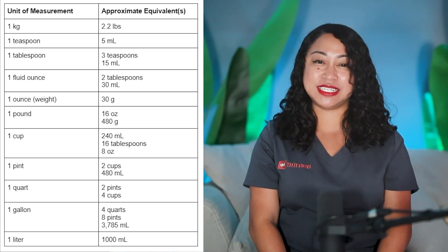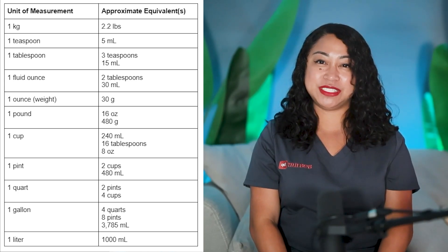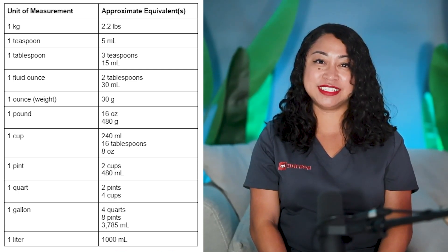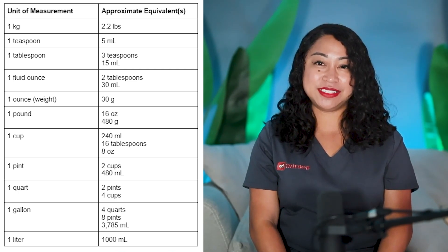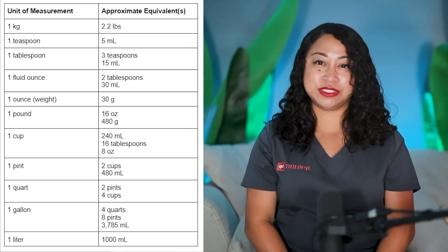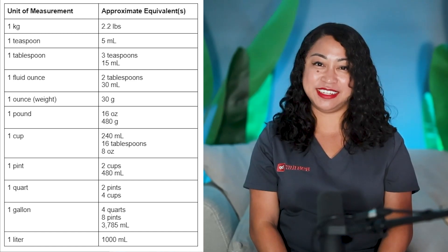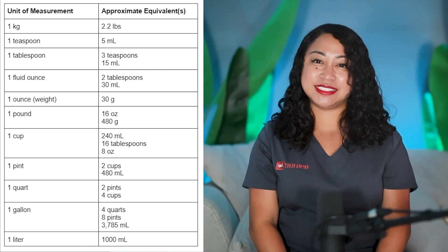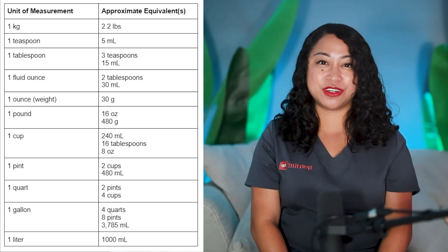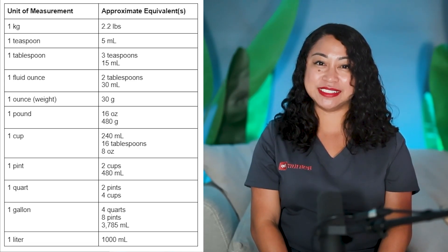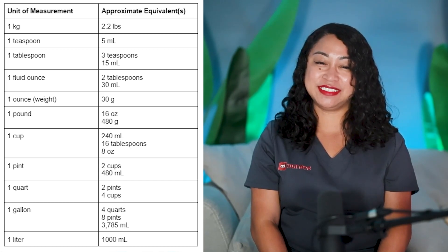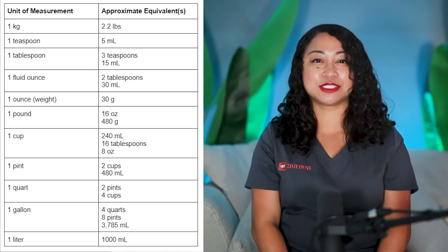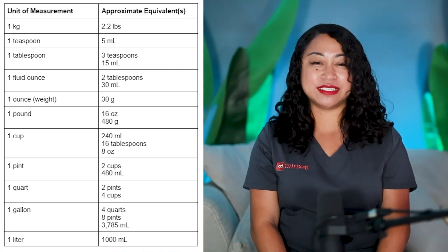One pound is equal to 16 ounces or 480 grams. One cup is equal to 240 milliliters, 16 tablespoons, or 8 ounces. One pint is equal to 2 cups or 480 milliliters. One quart is equal to 2 pints or 4 cups. One gallon is equal to 4 quarts, 8 pints, or 3,785 milliliters. One liter is equal to 1,000 milliliters.